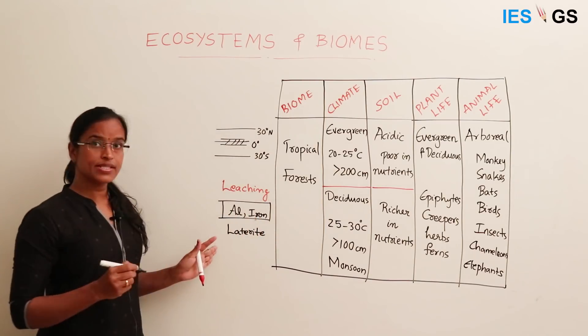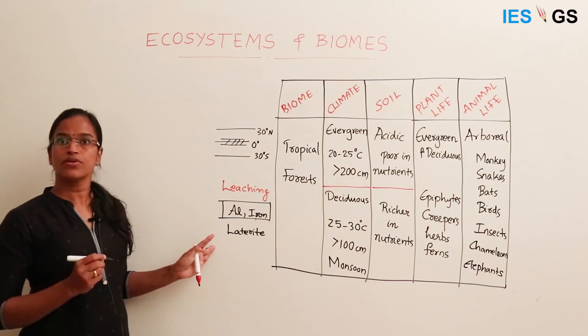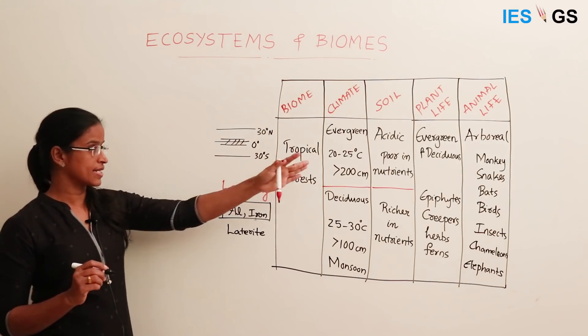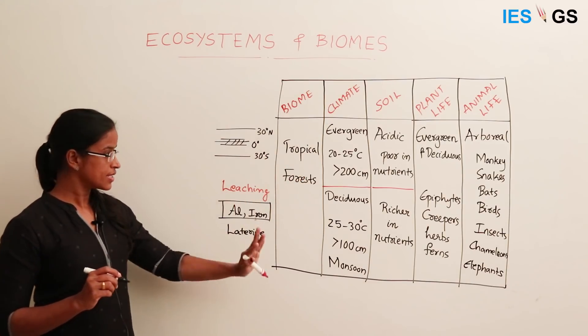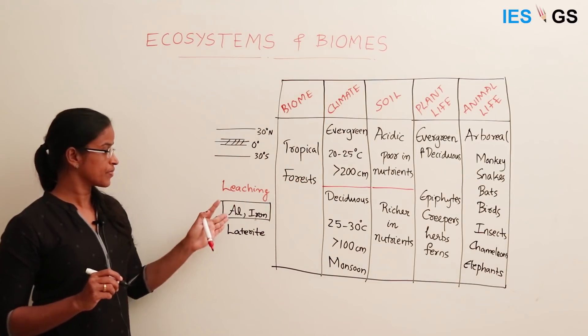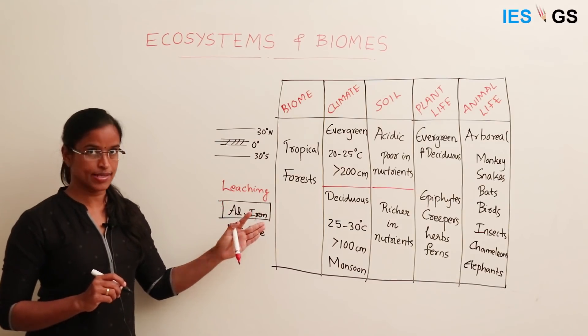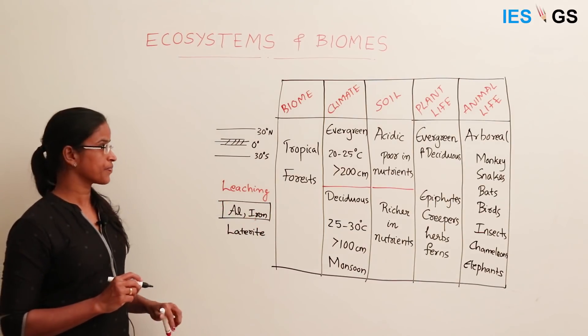These soils are called laterite soils. Laterite soils are not so rich in nutrients and they are acidic, because the aluminium and iron compounds are slightly acidic in nature.